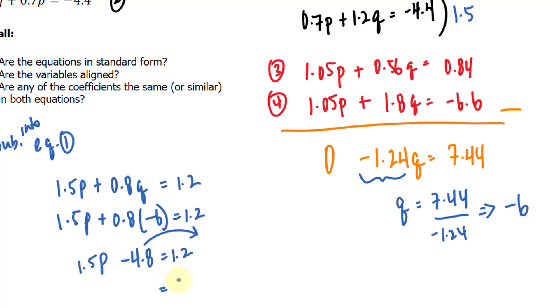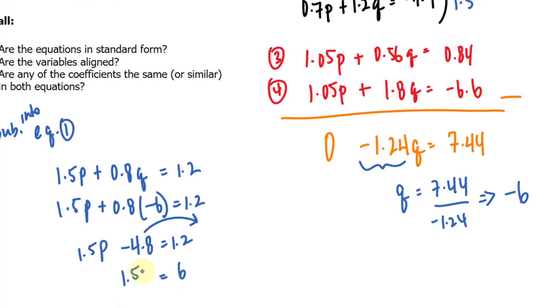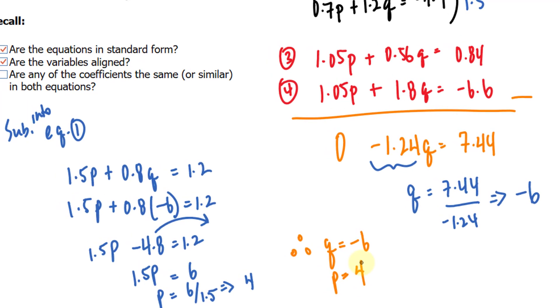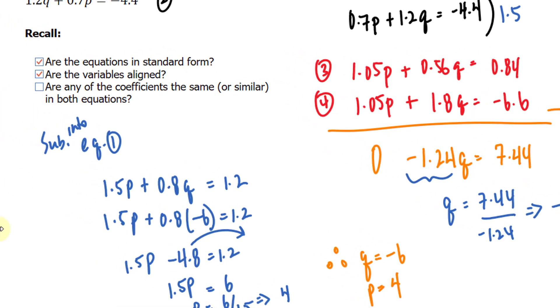We will bring that over. And that gives us a value of 6. Dividing both sides by 1.5 gives us an output of 4. And therefore, q is negative 6 and p is positive 4.